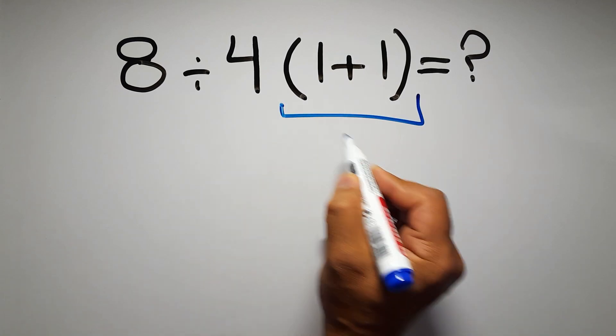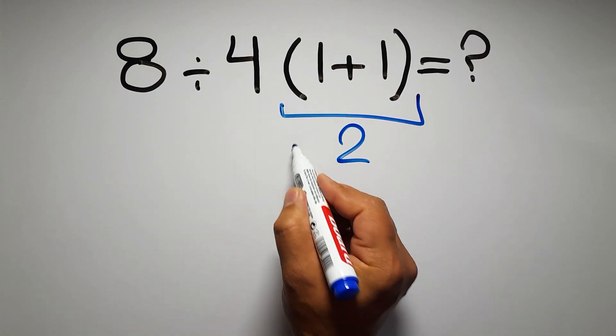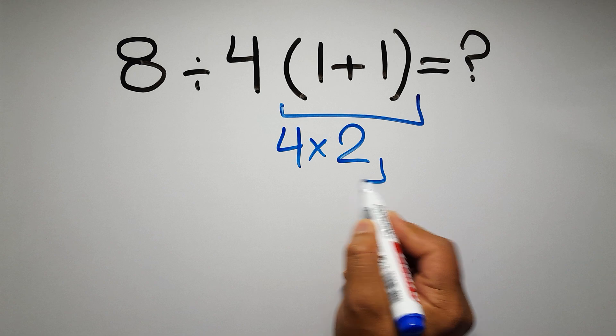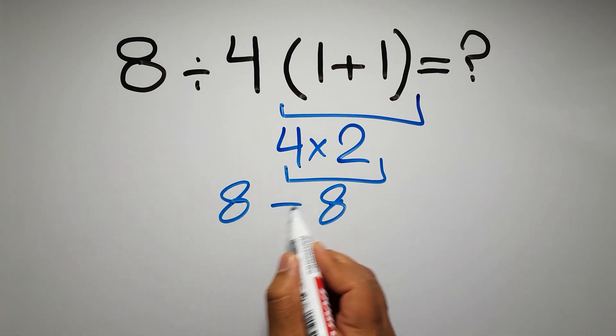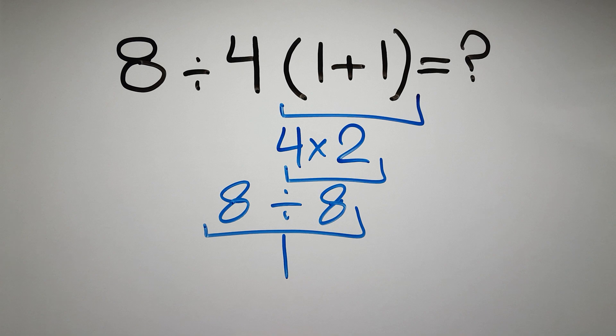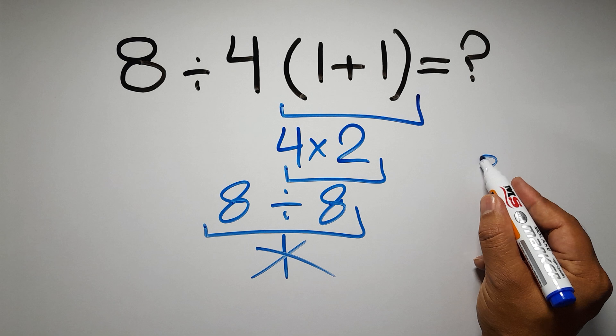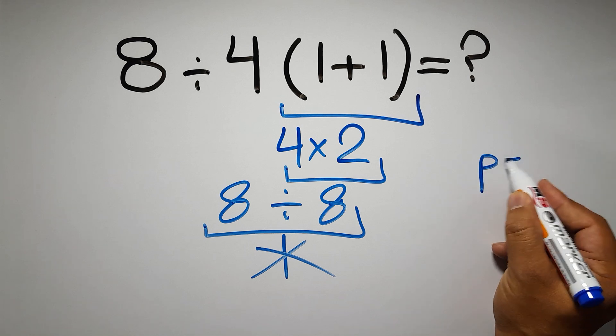1 plus 1 gives us 2 and 4 times 2 equals 8, so 8 divided by 8 equals 1. But this answer is not correct because according to the order of operations, first we have to do parentheses, then exponents.